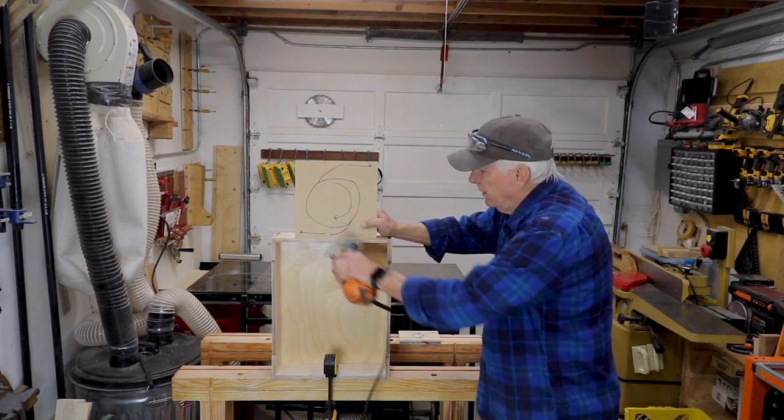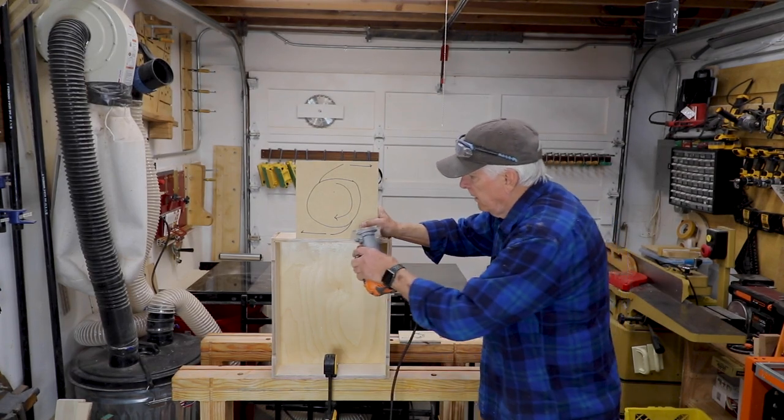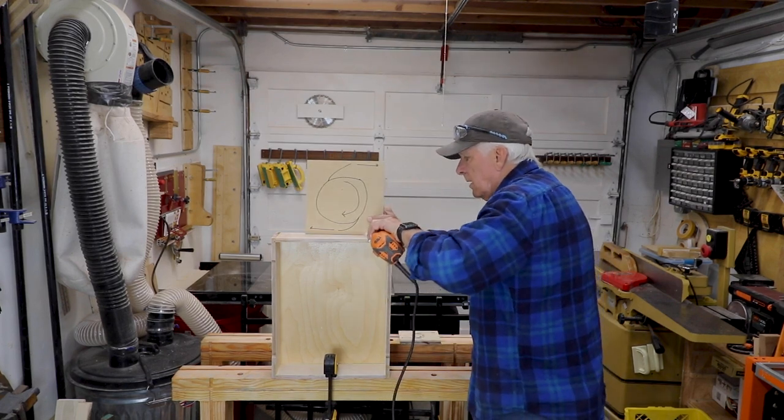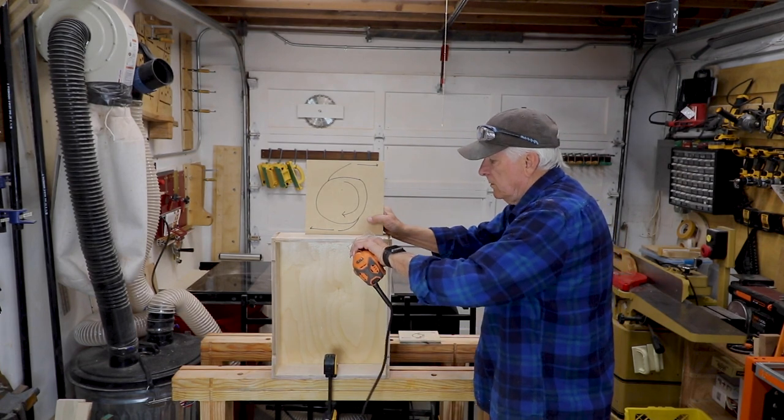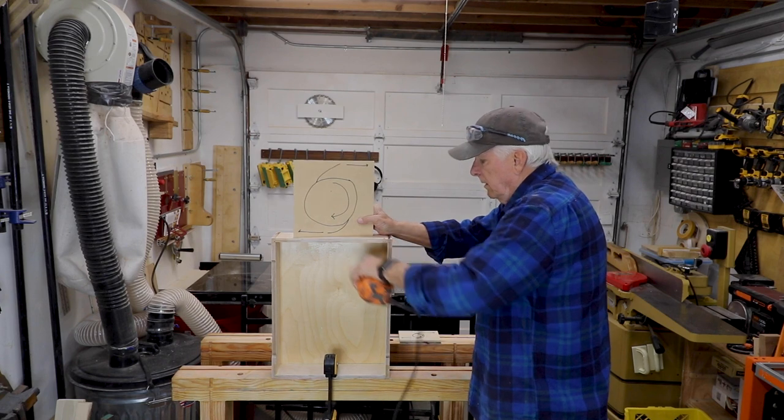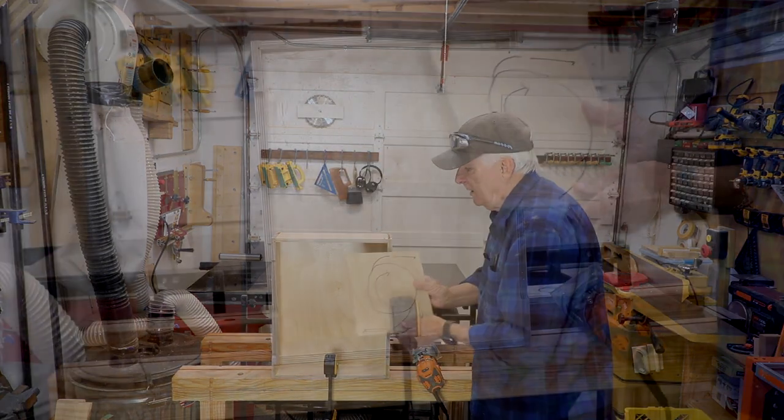Where the router bit is touching the wood, it's going that direction. So I would go this direction. If I was going on the underside of this, then I just changed it, didn't I? Or did I? Let's see.